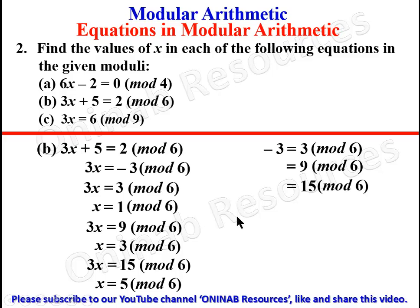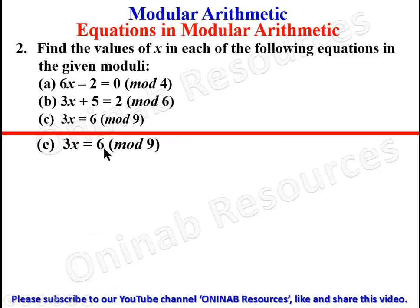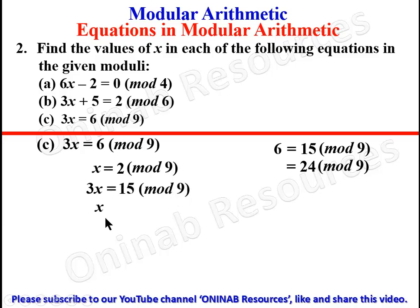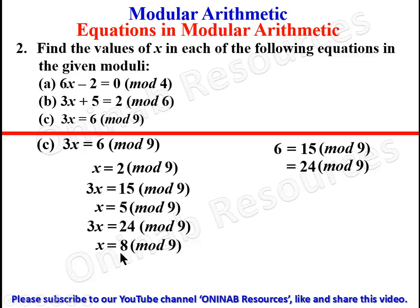Problem 2(c): 3x ≡ 6 (mod 9). Since 6 is divisible by 3, our first solution is x ≡ 2 (mod 9). We continue adding 9: 6 + 9 = 15 (mod 9), giving x ≡ 5 (mod 9); 15 + 9 = 24 (mod 9), giving x ≡ 8 (mod 9). Note 33 is also divisible by 3 but gives 11, which exceeds the modulus, so we stop. The values are x ≡ 2, 5, 8 (mod 9).